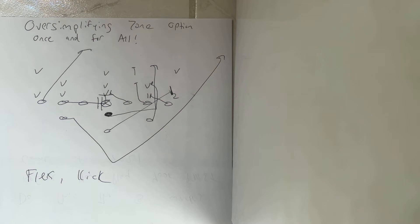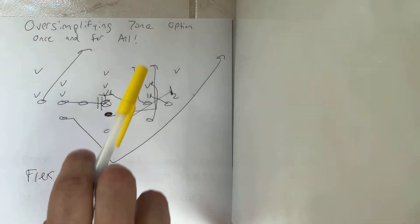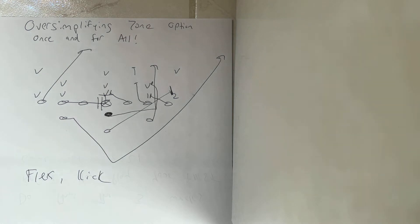And number two, when zone option began, it began as a reach scheme where the tackle was reaching number one, the guard was reaching the B gap player, the center was reaching the A gap player.